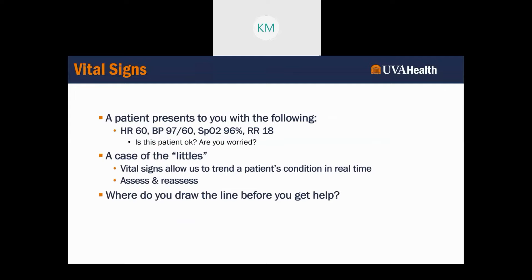Let's look at vital signs specifically. A patient presents to you with the following: heart rate of 60, blood pressure of 97 over 60, sat at 96%, and a respiratory rate of 18. Is the patient okay? Are you worried about this patient? Well, if we go back to our vital signs that are technically our normals, that's our place to start.